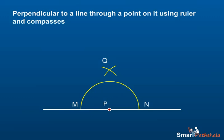Step 4: Join PQ. Thus, PQ is the required perpendicular.